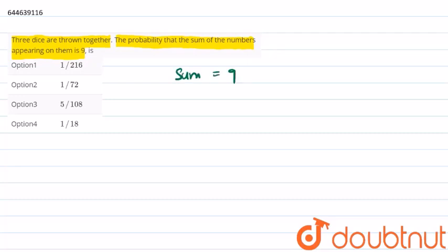sum should be equal to 9 and we know that total outcomes is 6³. And now let